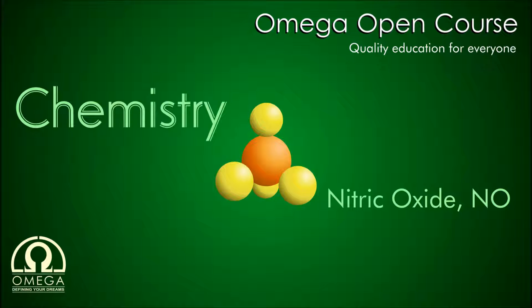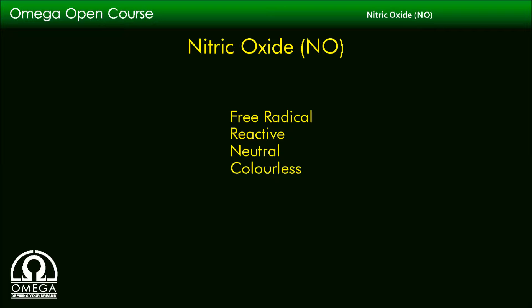Welcome to Omega Open Course. In this video, we are going to discuss the preparation, properties and usage of nitric oxide. Since nitric oxide contains a single unpaired electron, it is a free radical and therefore it is very reactive. It is a neutral and colorless gas.